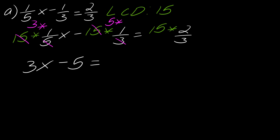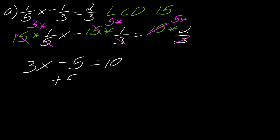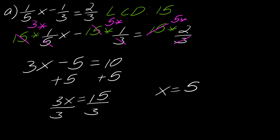Now we go to the other side. Three goes into fifteen five times, and then five times two is ten. So here's what I'm left with: 3x minus 5 equals 10. I can add five to each side so I get 3x equals 15, then divide each side by three to get x equals 5.